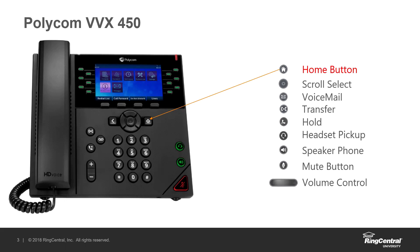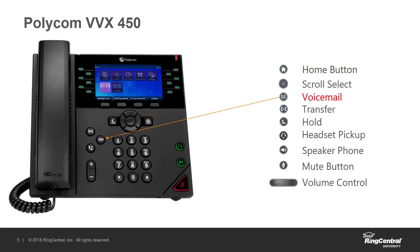First, we have the home button. When you press that, you'll get the screen shown on the presentation. It's how you access your contact log within the phone and access settings specific to the phone — things like screen brightness and dial tone. You'll press that home button and then use the arrow keys to scroll and navigate. Those navigation pad buttons cover cardinal directions — up, down, left, and right — plus a center button to select.